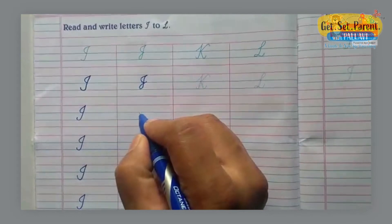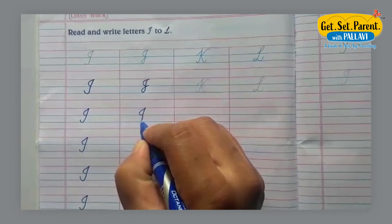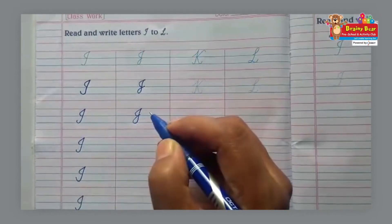Again, start from the second line. Make a curve like this. And a line like this, we make in I and like this.